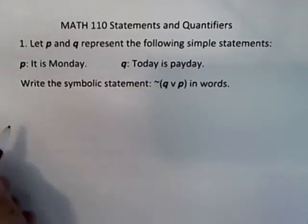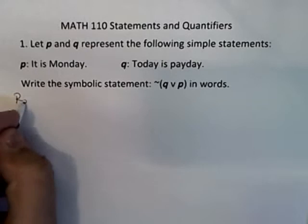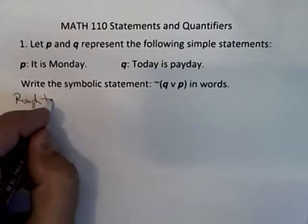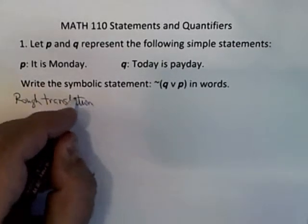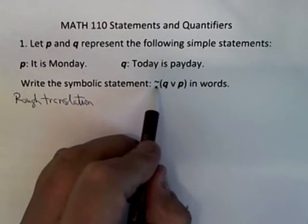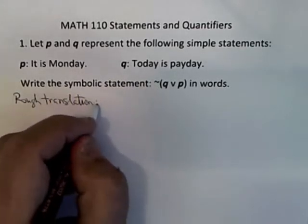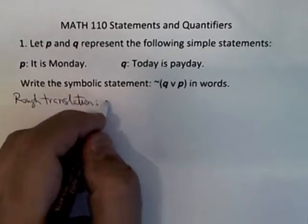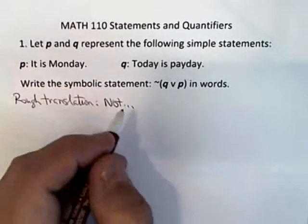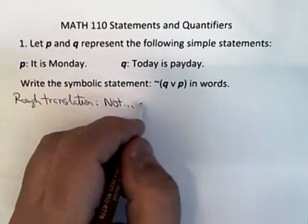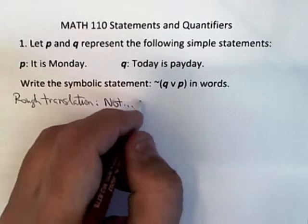The way I would look at it is that you might first try what I might call just a rough translation — just roughly what this means. Remember, the negation is generally 'not.' So a rough translation would be something like 'not whatever follows,' and whatever follows is Q, which is 'today is payday.'